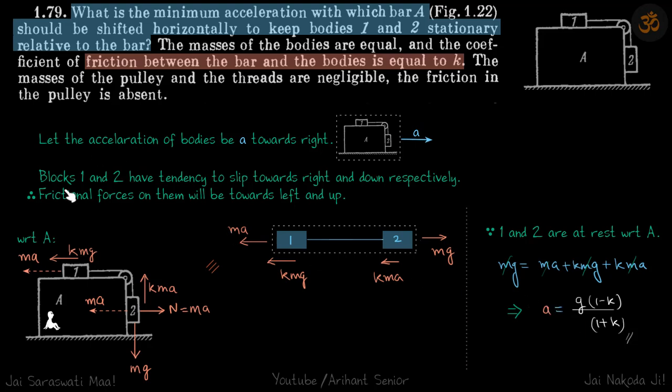So let's quickly read this also once, we have already discussed but let's just read. Blocks one and two have tendency to slip towards right and down respectively, therefore frictional forces on them will be towards left and up.